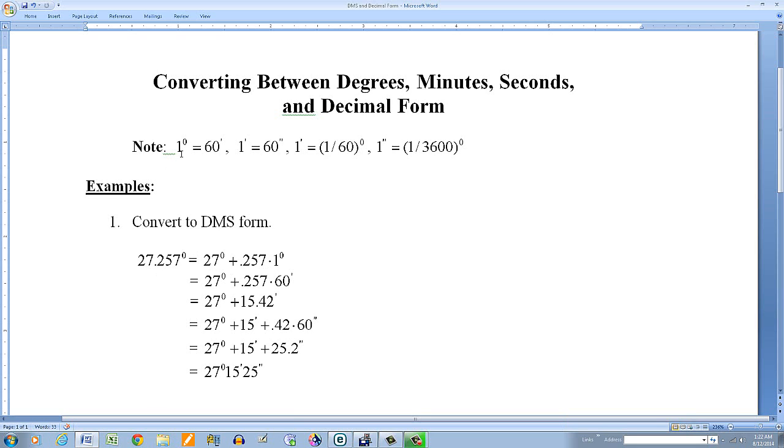But one degree we know is equal to 60 minutes. So instead of this one degree I put 60 minutes right there. And then I do the multiplication. And then the next step gives me 27° + 15.42'.